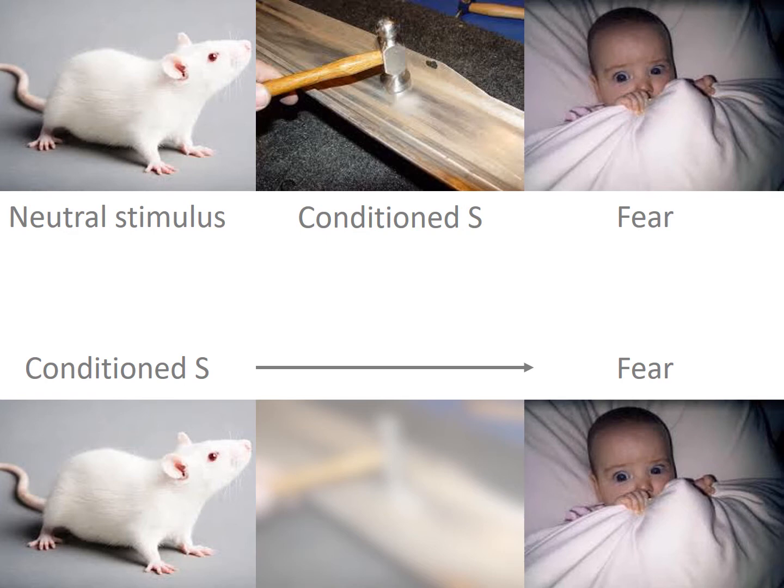Eventually, after Little Albert was exposed to this sequence of the rat and then the noise many times, the rat even by itself would evoke the same crying and fear. This sequence of events is an example of classical conditioning.